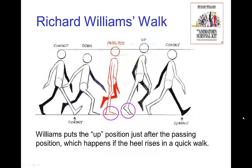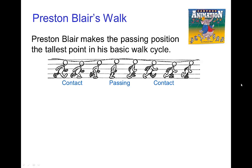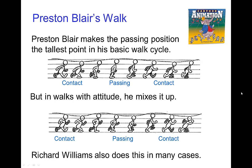If you're familiar with walks in Richard Williams' Animator Survival Kit, you may know that he puts the highest position of the body just after the passing position. He has a little bit of a rise in the heel in his basic walk — he likes to have a bit of this wave pattern. For Preston Blair, his basic walk looks more like what we saw in the video, with the highest position around the passing position and the lowest at contact. But he also varies that with different walks, so that sometimes the highest point is just before or just after the passing position, as with Richard Williams.